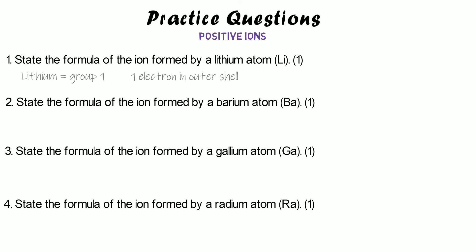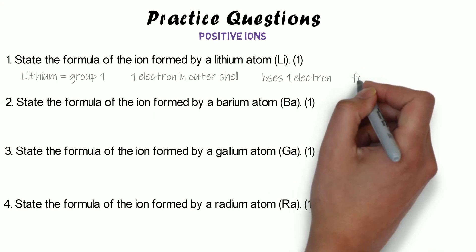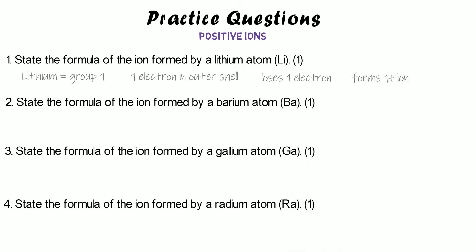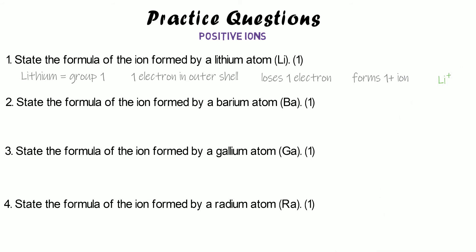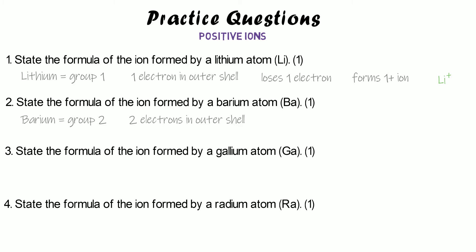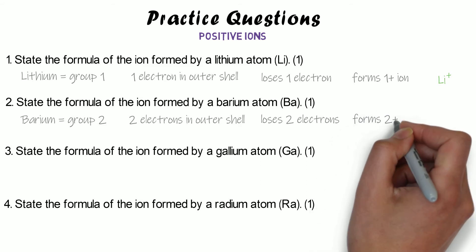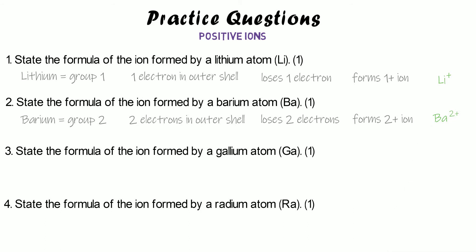Lithium is going to lose that electron, and because it's lost one negative electron it becomes one more positive — it forms a 1+ ion. Since the symbol is Li, the formula for the ion is Li⁺. Barium is in group two, so it has two electrons in its outer shell and it's going to lose both of them. When it loses two electrons it forms a 2+ ion, so the Ba atom becomes Ba²⁺ as an ion.